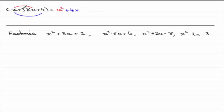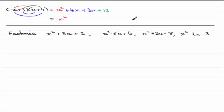Then you do the plus 3 times x, which gives plus 3x. And finally, 3 times 4 is 12. If we simplify this, we've got the x squared term, and 4x and 3x group together to give 7x, and then the constant on the end, plus 12.